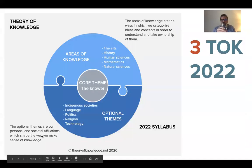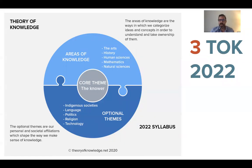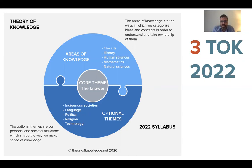Let's have a quick look at the course. We've designed a diagram you've probably seen on the website. You're welcome to download it and put it on your walls. It took me a long time to figure out the relationship between the areas of knowledge, the optional themes, and the core theme. I went through all sorts of complicated arrows and flow charts and ended up with a much simpler diagram, which I think students themselves can use to make sense of the course.